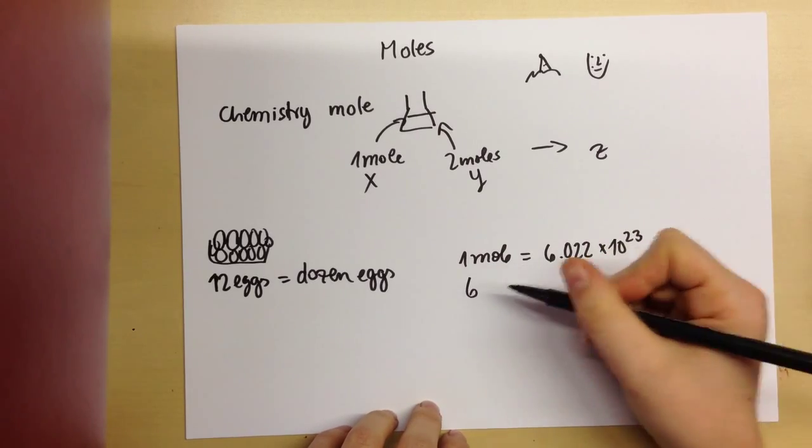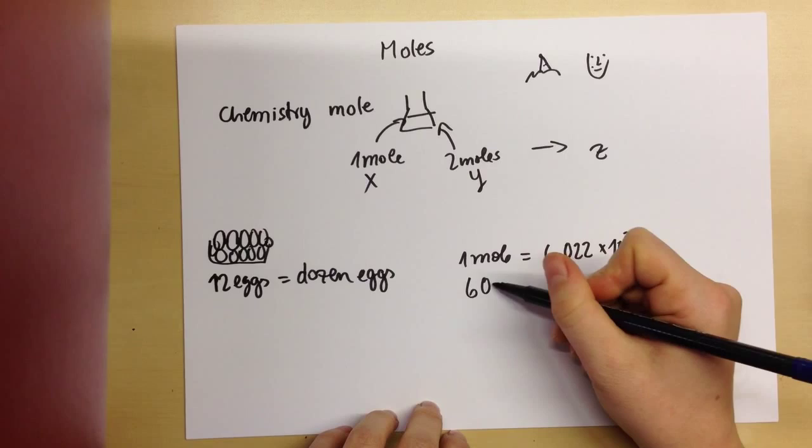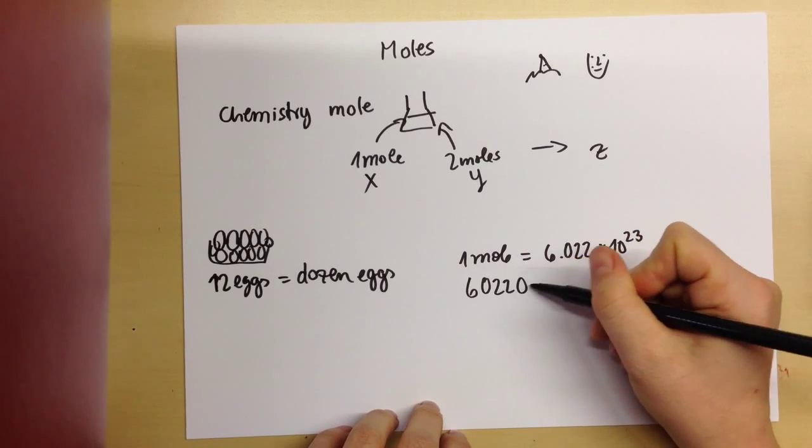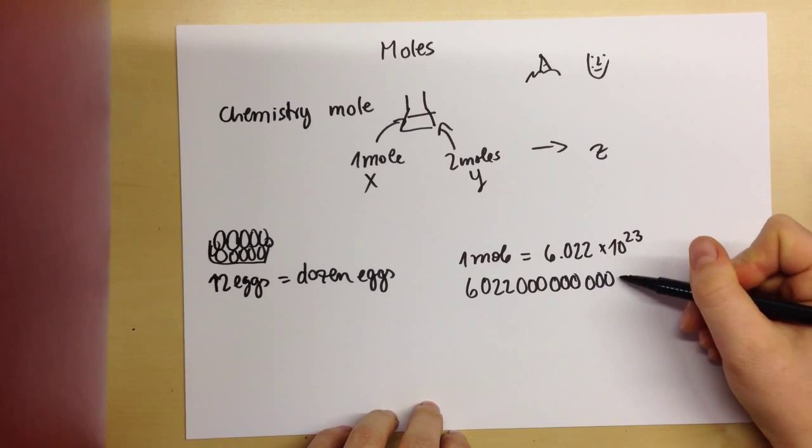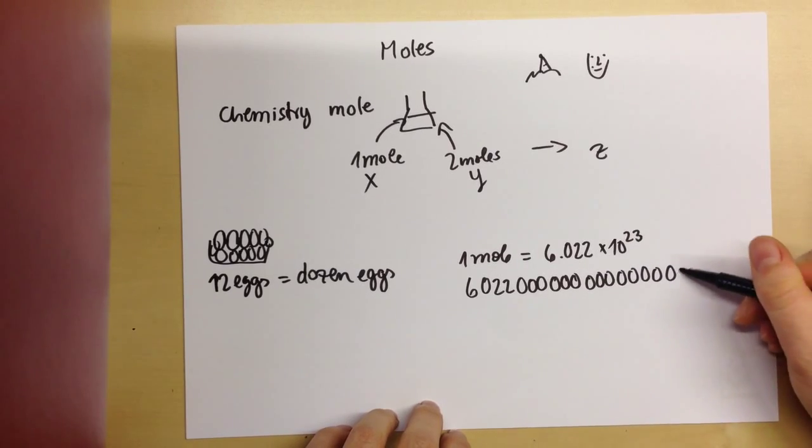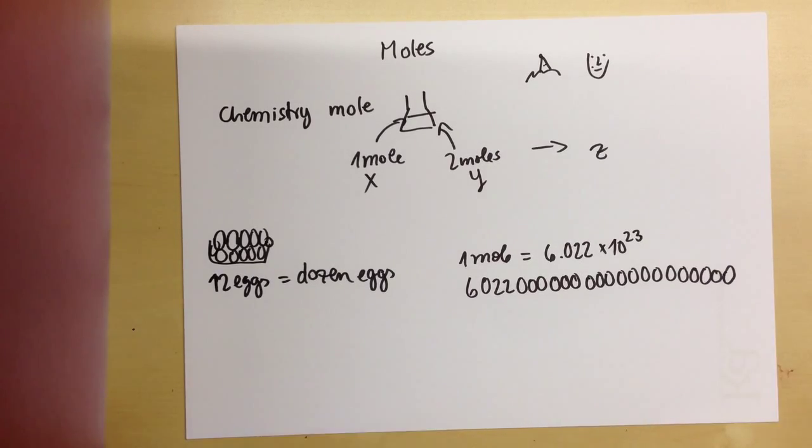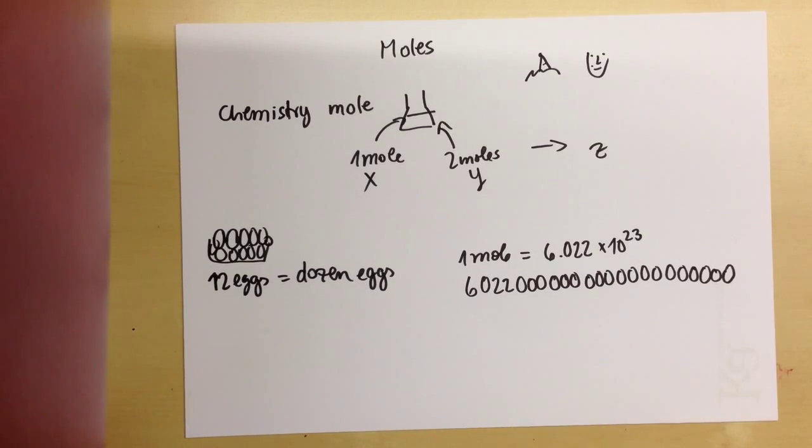So the reason we write it this way is because that's a whole lot of zeros. So if you were to write it with all the zeros, it would be 1, 2, 3, 4, 5, 6, 7, 8, 9, 10, 11, 12, 13, 14, 15, 16, 17, 18, 19, 20, 21, and 23. So lots and lots of zeros.